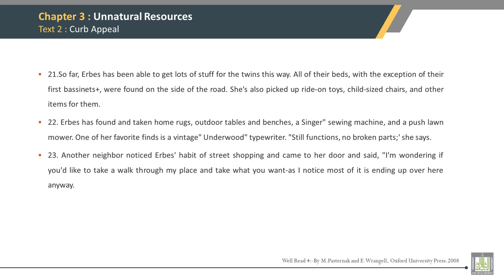First sentence of paragraph 21: So far, Herbs has been able to get lots of stuff for the twins this way. The fourth sentence of paragraph 22: Herbs has found and taken home rugs, outdoor tables and benches, a Singer sewing machine, and a push lawn mower. The fourth sentence of paragraph 23, which is also the last sentence: Another neighbor noticed Herbs' habit of street shopping and came to her door and said, 'I am wondering if you would like to take a walk through my place and take what you want, as I notice most of it is ending up in the street anyway.'